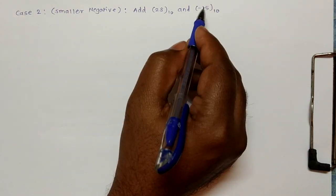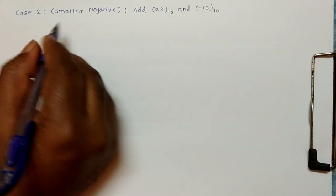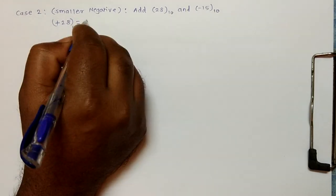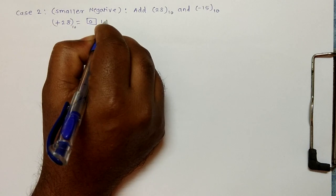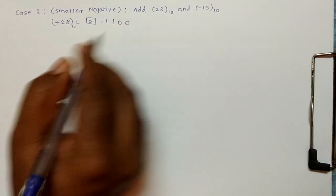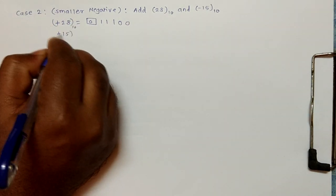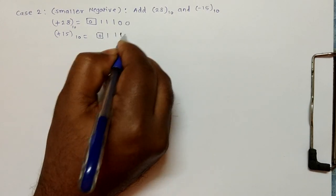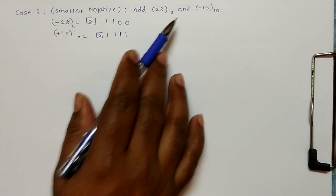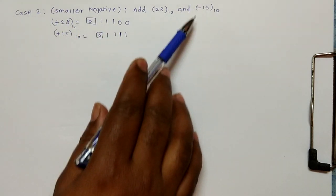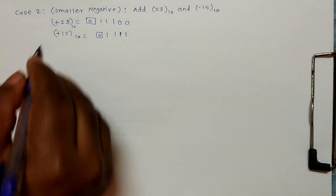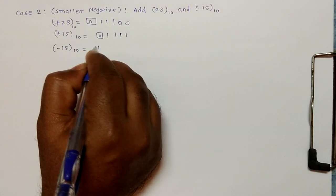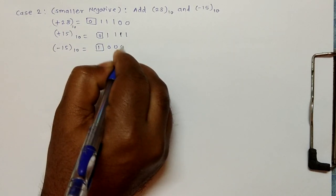The smaller number is minus fifteen. First, we represent plus twenty-eight in binary — the sign bit is zero, and the magnitude bits are one one one zero zero. Plus fifteen in binary is zero followed by all ones. Since minus fifteen is negative, we represent it in one's complement form. So minus fifteen in one's complement will have sign bit one and the other bits are zeros.